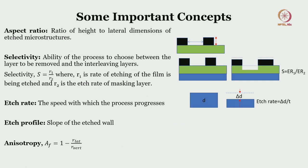Before we dive deeper into etching, we should know some key terms: aspect ratio, selectivity, etch rate, etch profile, and anisotropy. The aspect ratio is the ratio of height to lateral dimensions of the etched microstructures — that is, what is the height and what are the lateral dimensions.